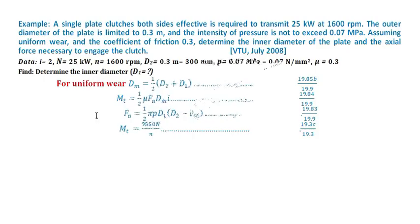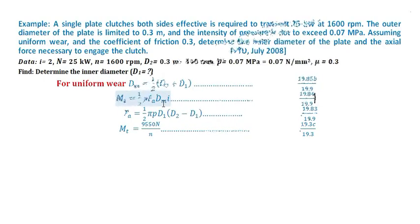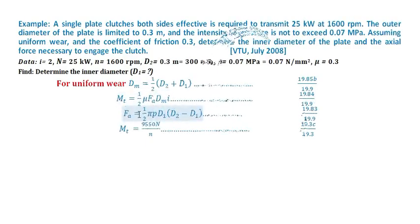Mt equals 1 by 2 mu into fa dm by i. Now mt is unknown and fa is unknown. First we are going to find out fa, which equals 1 by 2 pi small p d1 times d2 minus d1.